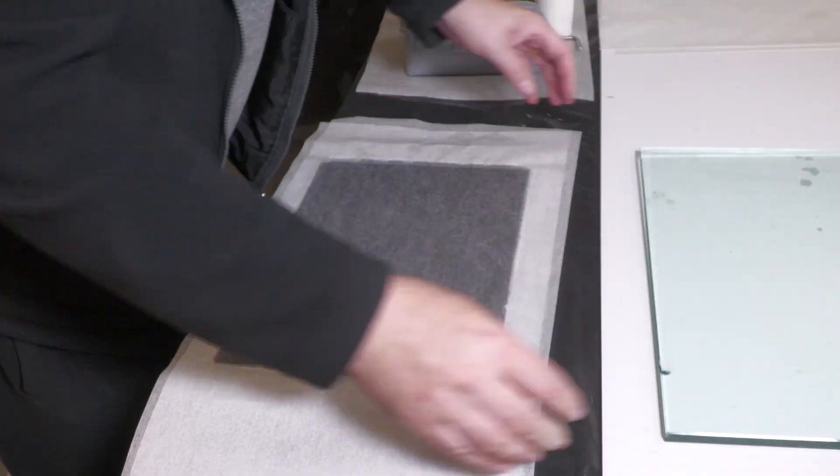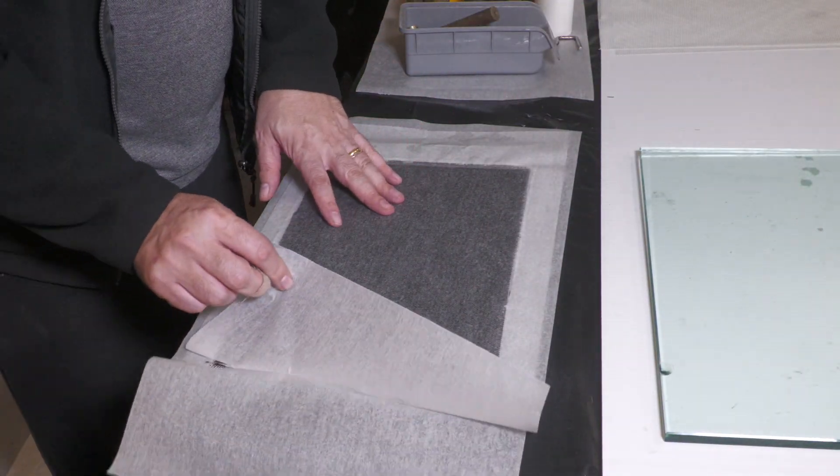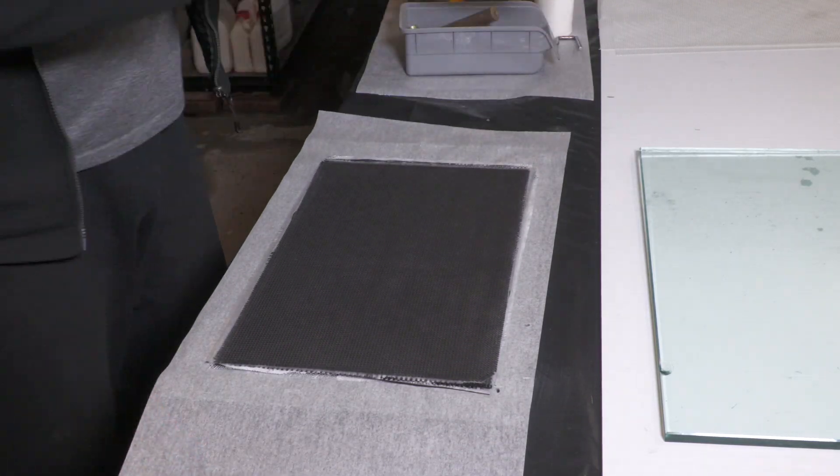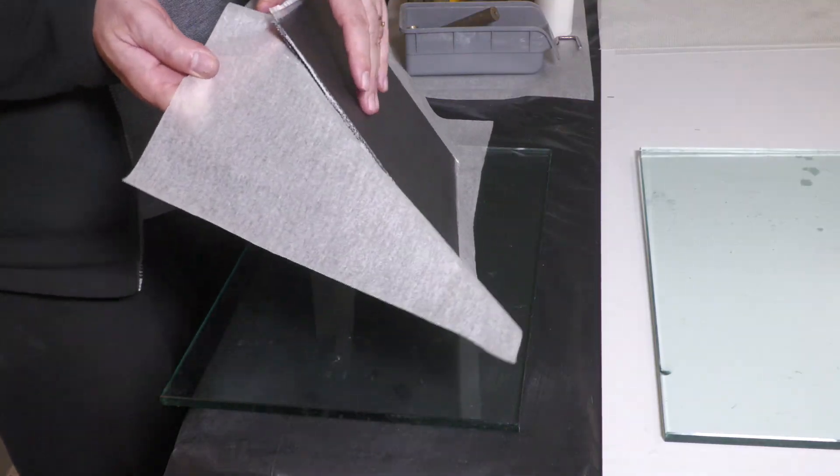We can then peel off the baking paper. The surface isn't shiny but smooth enough not to need any sanding. This is the final surface we went with.